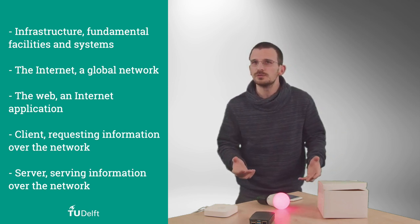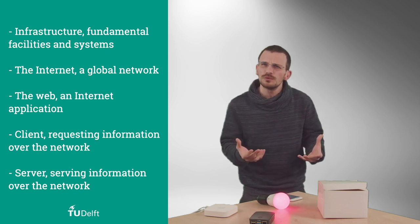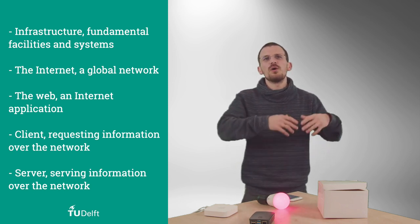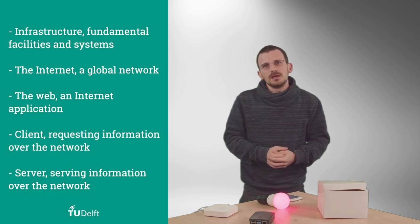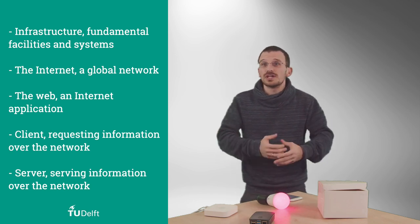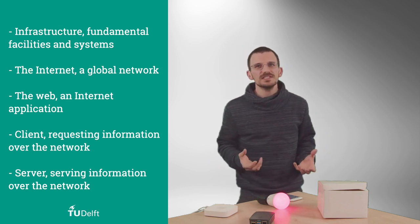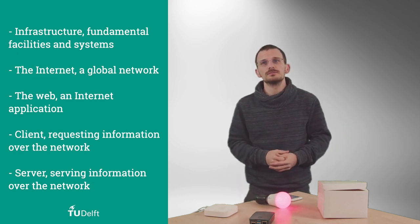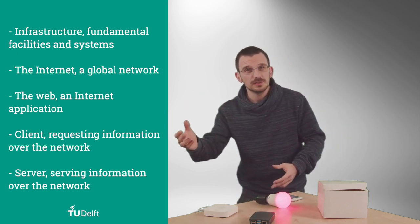We highlight the distinction between the Internet, this global network and the web, only one application on that network. And the concept of client and server. The client is a computer requesting information such as the light bulb, a web page, a smartphone. On the other side of the network, a server serves information in response to a client request.